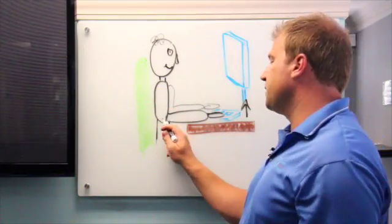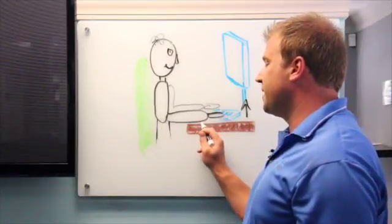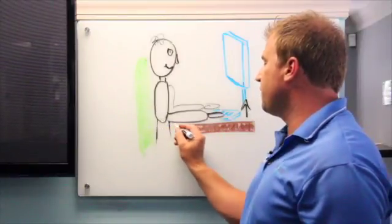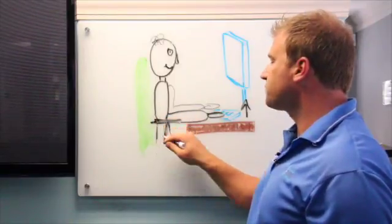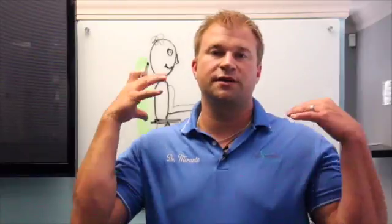So one of two things. One, you can scoot in so the elbows are on top of the desk. The other thing is if you have an armrest on your chair that can come up and support your elbows, it's going to allow the stress and strain to come off your shoulders.